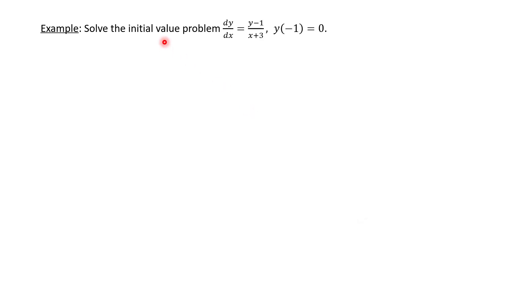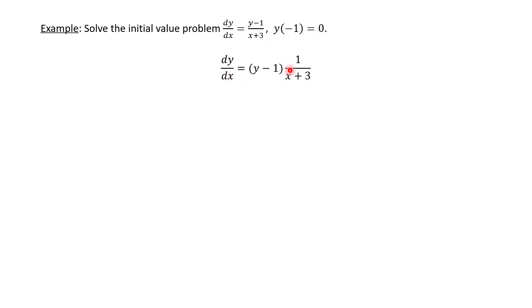Let's try another one. This time we have an initial value problem: dy/dx equals (y minus 1) over (x plus 3), and because it's an initial value problem, we're given an initial condition — when we plug negative 1 into the function y, we get 0. Just to show the setup, you can clearly separate the terms with y from the factors with x, so this does fit our format for a separable equation.